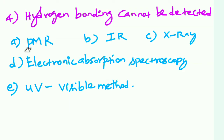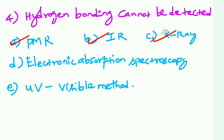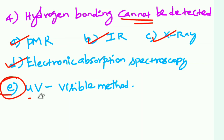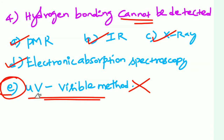Final question: Hydrogen bonding can be detected by PMR — Proton Magnetic Resonance, also called NMR — Nuclear Magnetic Resonance. PMR detects hydrogen. The methods to detect hydrogen bonds are PMR, IR, X-ray, and electronic absorption spectroscopy. The correct detection methods are confirmed; the wrong answer option is identified accordingly.